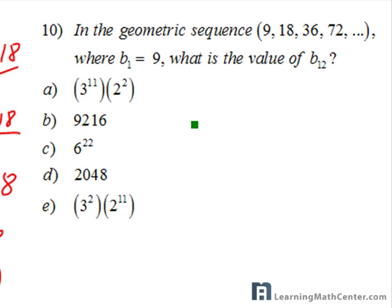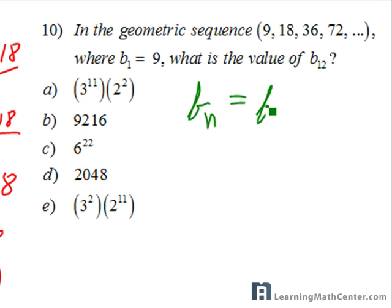There's a formula to calculate the nth term of a geometric sequence. The formula is b(n), n being the term that you're looking for, is equal to b(1) — b(1) being the first term of the sequence, in this case 9 — times r to the n minus 1 power.